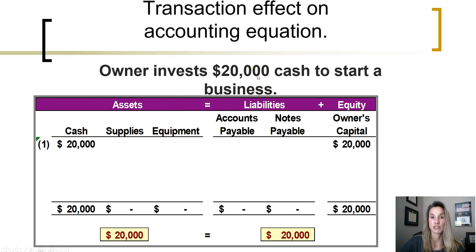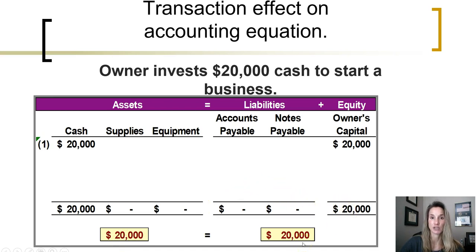$20,000 cash was given to the business by the owner. The owner has invested into the business. We will keep track of the amount of owner investments in the owner's capital account — it's an equity account. Because the owner now has more equity in the business after investing, owner's capital will increase $20,000. After this transaction is recorded, total assets will be $20,000 and total liabilities plus equity $20,000. The only asset the company has is cash, and the only equity balance is in owner's capital of $20,000.